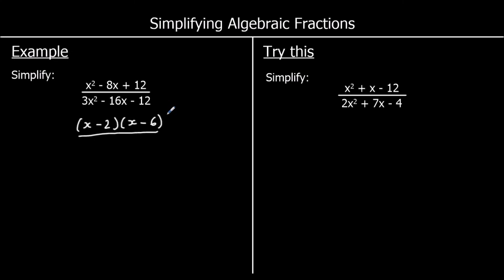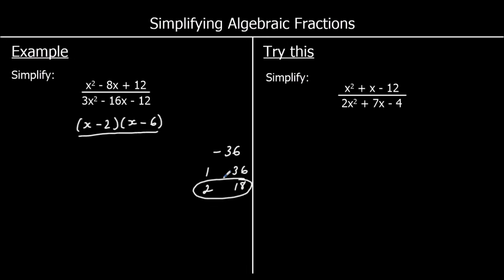For the bottom, there are lots of different ways of factorising these quadratics. I'm going to use the a times c method. So 3 times negative 12 gives negative 36. We're going to see what multiplies to make 36 and adds to make negative 16. We could have 2 and 18 — plus 2 and minus 18 adds to give negative 16 and multiplies to give negative 36.